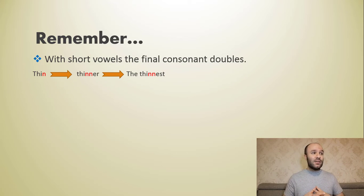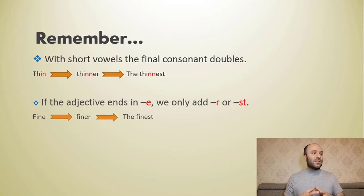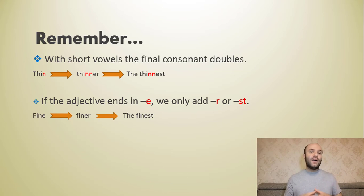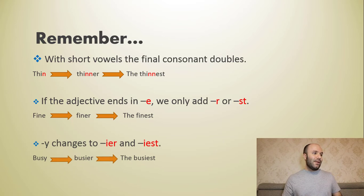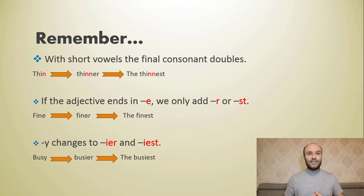A quick recap: for short vowels, the final consonant doubles — for example, 'thin' becomes 'thinner' and 'the thinnest'. If the adjective ends in '-e', we only add '-r' or '-st' — for example, 'fine' becomes 'finer' and 'the finest'. And 'y' changes to '-ie' before adding '-er' and '-est' — for example, 'busy' follows this pattern. These rules are very important.